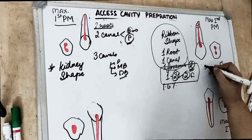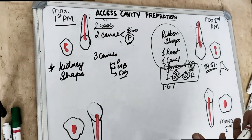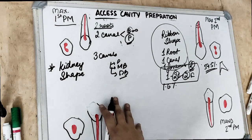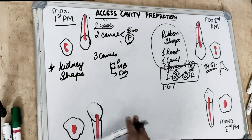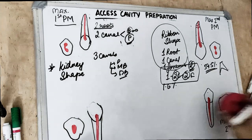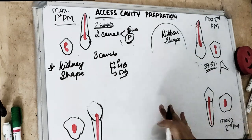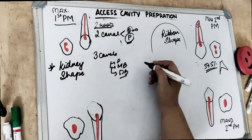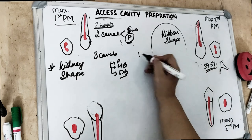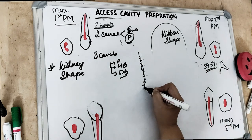More than 50% — specifically 59.5% — of maxillary second premolars have lateral canals. Coming to the mandibular first premolar, which is the most complex. To understand this, you should remember the Vertucci classification, which we have already covered. The Vertucci types are numbered 1 through 8.